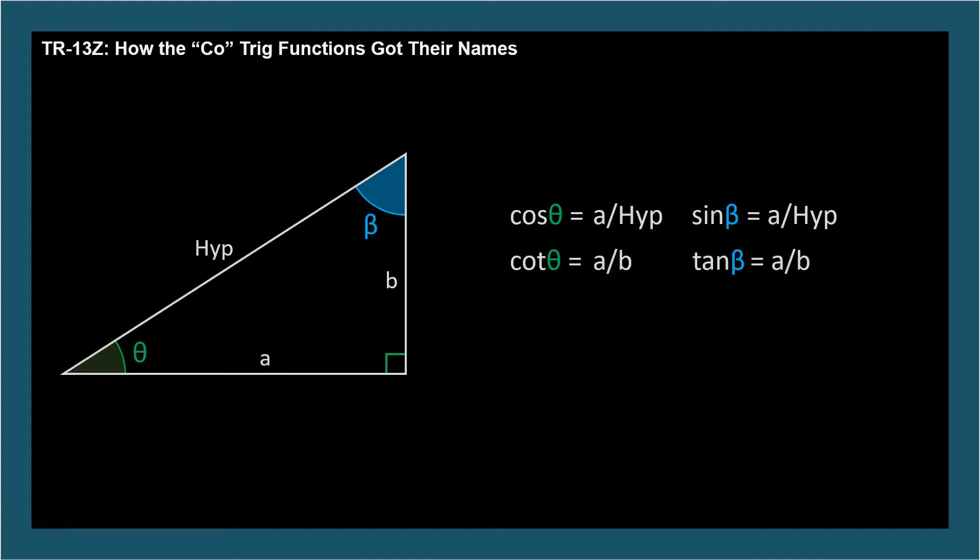The ratio for cosecant of theta is 1 over sine theta, so hypotenuse over opposite, which for theta is hypotenuse over B. And the secant of angle beta is 1 over cosine beta, so hypotenuse over adjacent, which for beta is also hypotenuse over B.